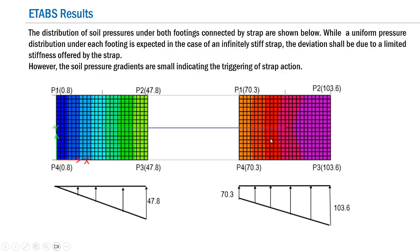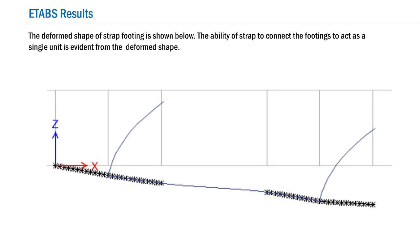Regarding the deformed shape of the strap footing: the strap is rigid enough to cause both footings to deform along a common line — in other words, the ability of the strap to connect the footings and make them act as a single unit is clearly evident from the deformed shape. Normally this kind of behavior is expected only for a rigid combined footing, but here, even though the footings are separate, the sufficiently rigid strap beam achieves very good behavior as shown.